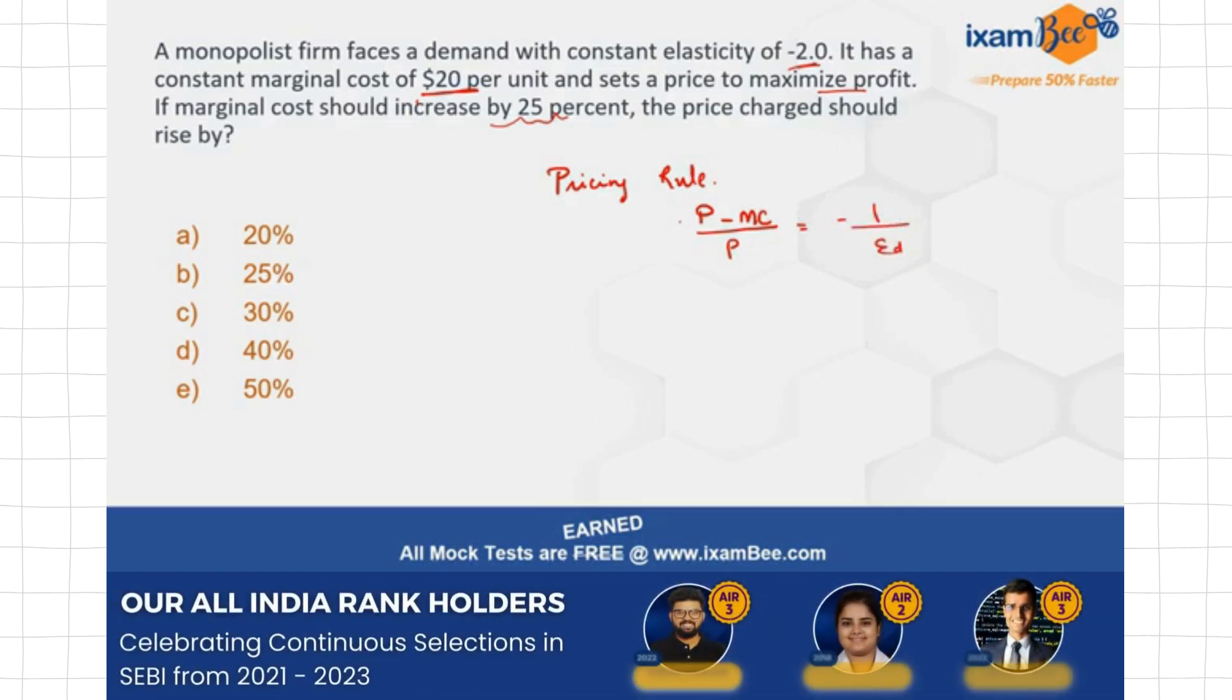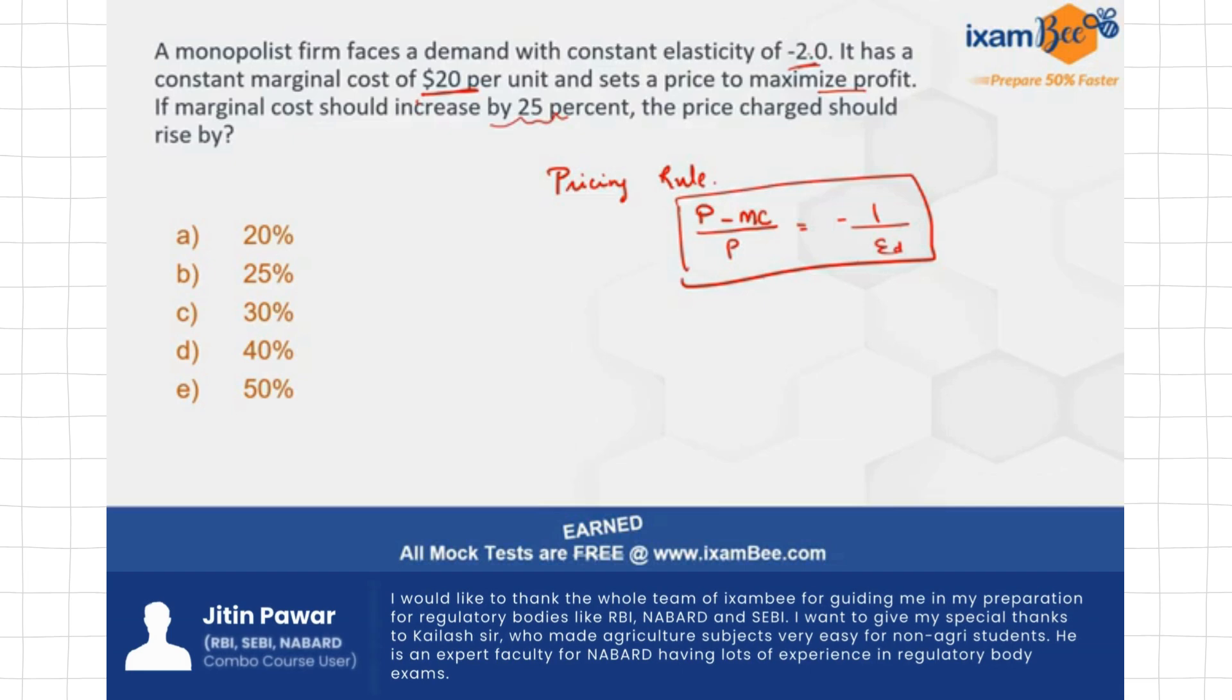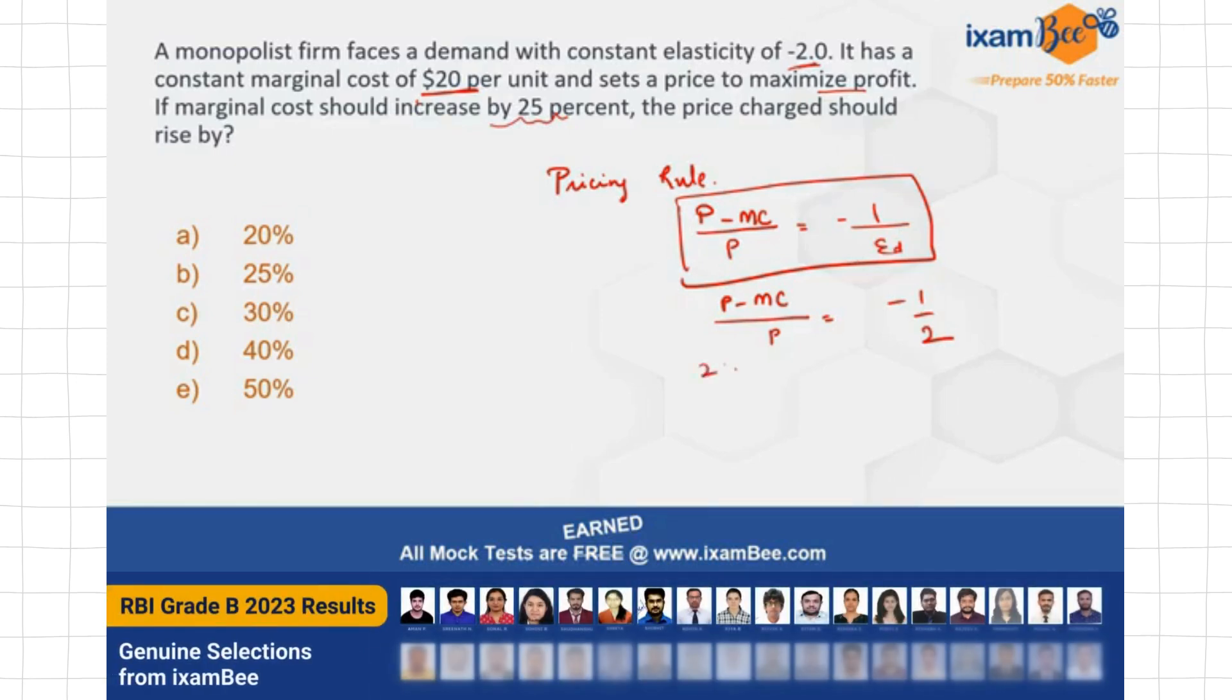So from this, if you plug in the value of 2 here in this equation, you have (Price - Marginal Cost) / Price equal to -1/2. Interchange these signs, what do you get? You have 2 times (Price - Marginal Cost) equal to... and this is minus elasticity, so this will cancel out, it will now become a plus here, right?